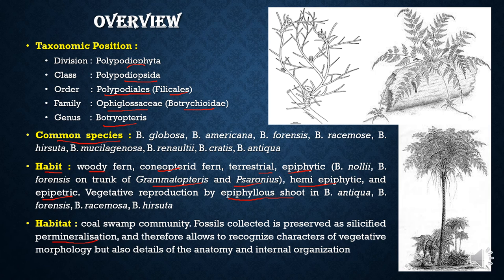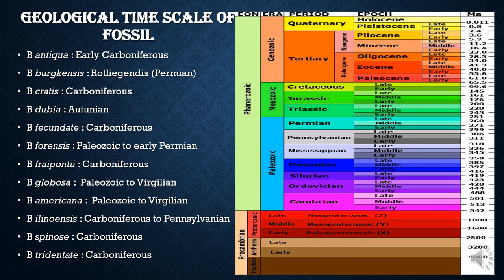This picture shows one form of Botryopteris that is repeatedly branched and does not have a foliar structure, whereas this species has many foliar appendages with perfect pinnae, and this pinna here is the fertile pinna. We see that fertile and sterile pinnae are interspersed. This is the plant of Psalixochlaena (Saronius), the tree fern, on which this Botryopteris is found growing epiphytically — making Saronius the epiphytic host of Botryopteris.